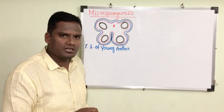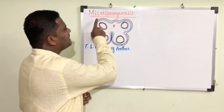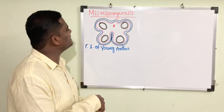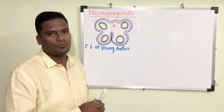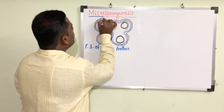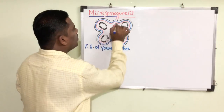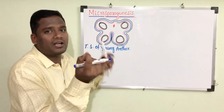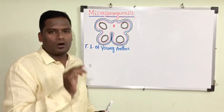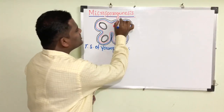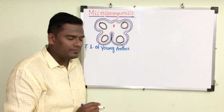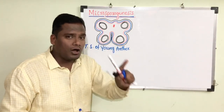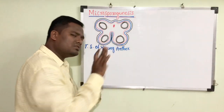Before we discuss the entire process of microsporogenesis, we have to understand what is the textual meaning of the word. Microsporogenesis is a combination of three different words: micro, spore, and genesis. Micro means small, minute, microscopic. Spore means reproductive cell or sex cell. Genesis means the process of formation. So the textual meaning is: the process of formation of microspores is called microsporogenesis.